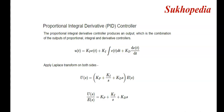Now applying Laplace transform, we get the transfer function of the PID controller. The transfer function is U(s)/E(s) = kp + ki/s + kd·s, where kp is the proportional constant, ki is the integral constant, and kd is the derivative constant.